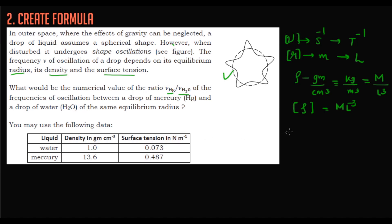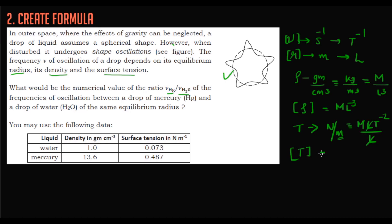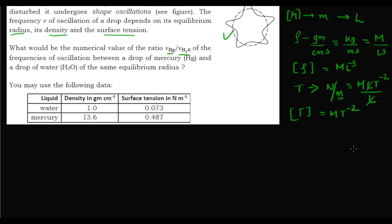Surface tension is given in Newton per meter. Newton is the unit of force, which is mass times acceleration: M·LT⁻²; divided by meter (L), we get the dimension of surface tension as MT⁻².